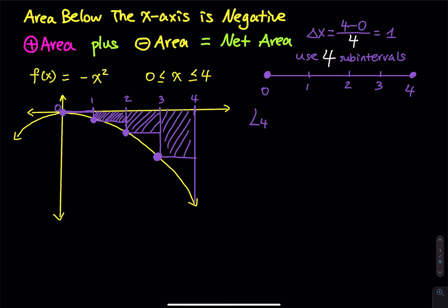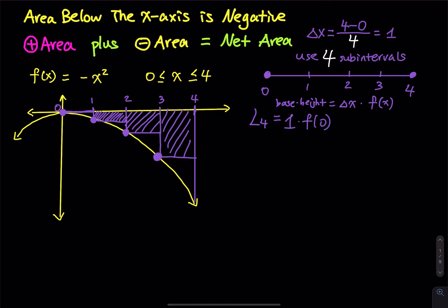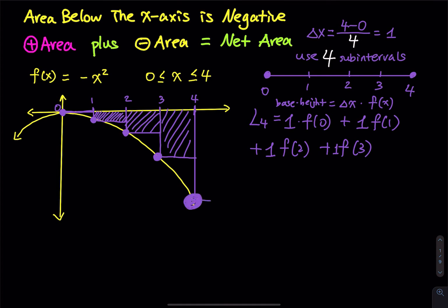What is the total area of these four rectangles? You use base times height, where the base is delta x equals 1. So L4 equals 1 times f(0), plus 1 times f(1), plus 1 times f(2), plus 1 times f(3). We do not need f(4) because aligning to the right from x=4 is already out of the domain, so there is no rectangle there.